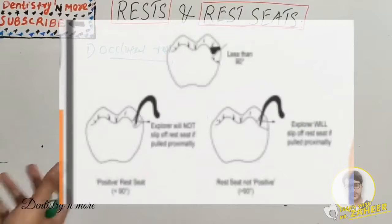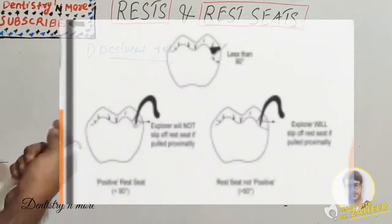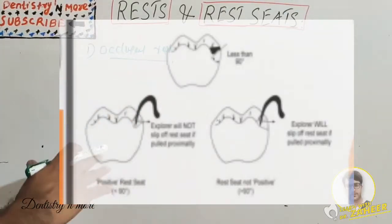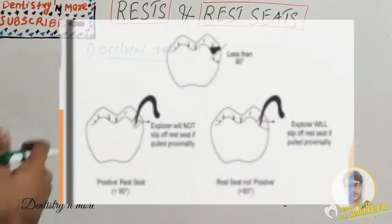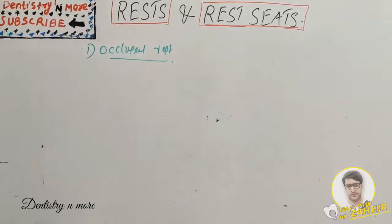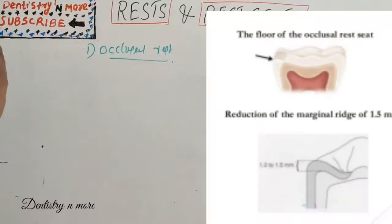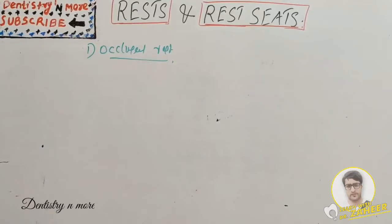Clinically, the angulation can be verified using an explorer probed proximally. If the angulation is less than 90 degrees, the explorer will not slip off — this is a positive rest seat. If the angulation is greater than 90 degrees, the explorer will slip off — this is not a positive rest seat. The floor of the occlusal rest seat requires reduction of the marginal ridge to a depth of 1.5 mm.